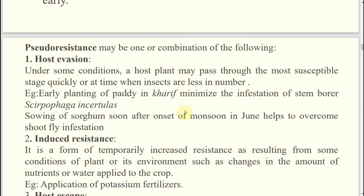This is a synchronization. Sometimes environment or human beings make a synchronization between the actively feeding stage of the insect and susceptible stage of the plant. Asynchronization brings lesser infestation. Like planting of paddy in Kharif will reduce the infestation of stem borers (Scirpophaga incertulas). Similarly, late sowing of rice in Rabi reduces the stem borer infestation. Due to this environmental characteristic, pest infestation will be reduced - known as host evasion.